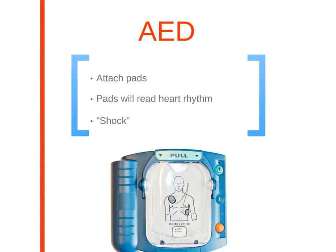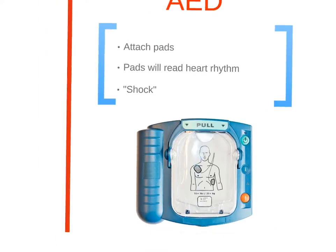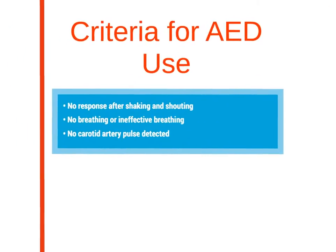To use an AED, attach the pads. The pads will read the heart rhythm and the AED will indicate whether a shock is needed. This resets the heart's abnormal electrical activity into a normal rhythm. When there is no response after shaking and shouting, no or ineffective breathing, or no carotid artery pulse detected, you should use an AED.